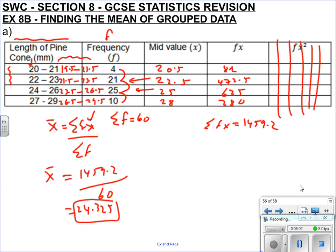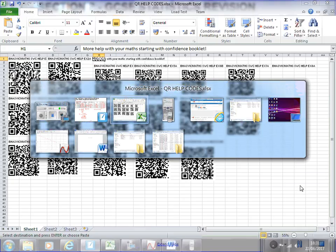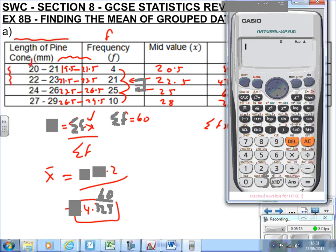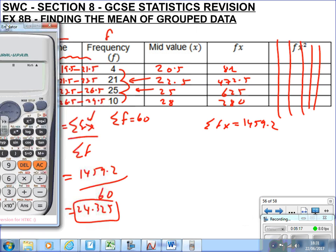That's the slow manual way. I want you to also be able to do it quickly using your calculator. Fill in the table first to build confidence, but also practice the fast calculator method.